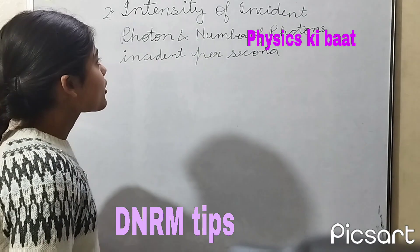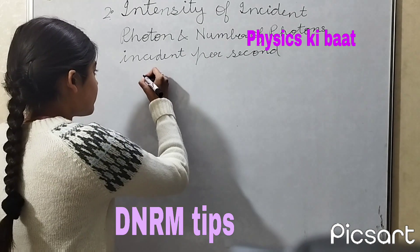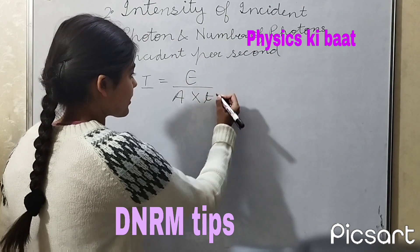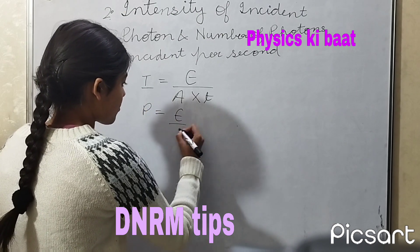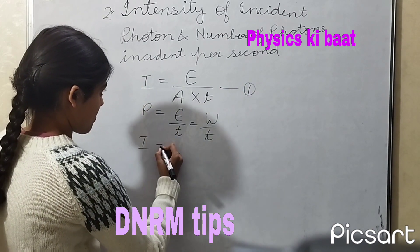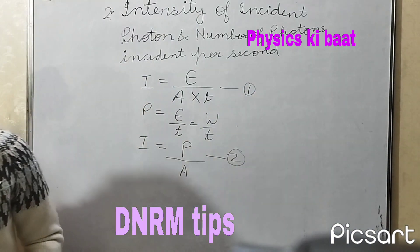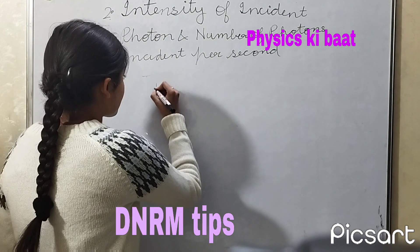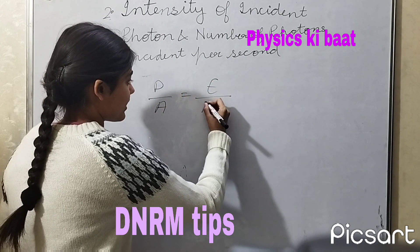The second tip is regarding the intensity of incident photons and the number of photons incident per second. We know that intensity can be written as energy per unit area per unit time. We also know that power is equal to energy divided by time. Hence, intensity becomes power divided by area. We can compare these two equations, and we get power divided by area is equal to energy divided by area into time.